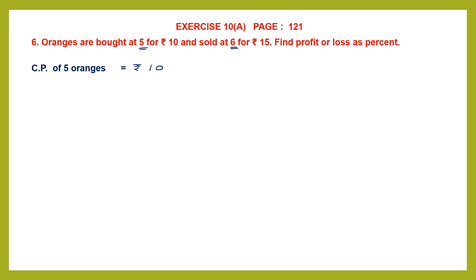So now we have the cost price of 5 oranges. Let's find the cost price of 1 orange. For that we write 10 rupees divided by 5. 10 divided by 5 is 2. So since it's a cost price, it's 2 rupees. The cost price of 1 orange is 2 rupees.